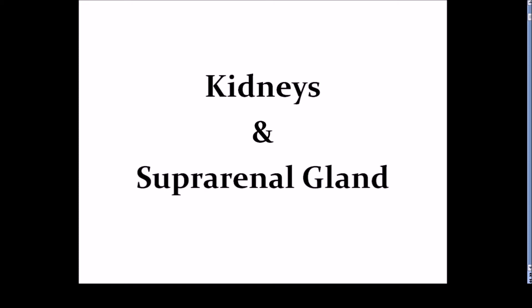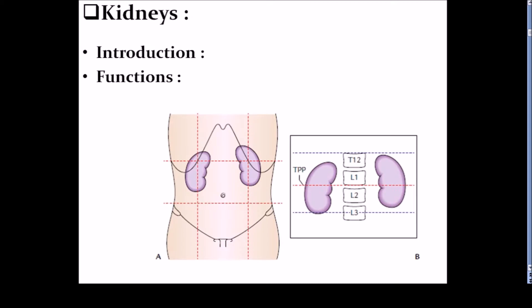Good morning, today we will discuss about the kidneys and suprarenal gland. Introduction: kidney, it is an essential excretory organ. Function is, it elaborates the urine, eliminates nitrogenous waste products of protein metabolism, maintains water and electrolyte balance of our body, secretes renin for autoregulation of blood flow and blood pressure. So these are the main functions of our kidney.